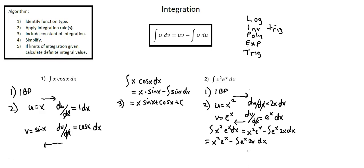Now notice what we have in this integral is another product of two functions. The difference is we've simplified one of those functions — we still have e to the power of x, but x squared is now 2x. We've decreased the degree of the polynomial function from 2 to 1.